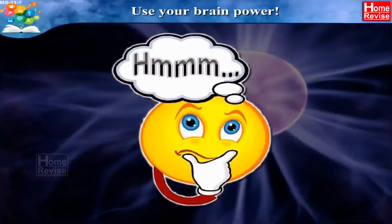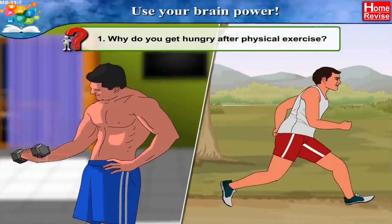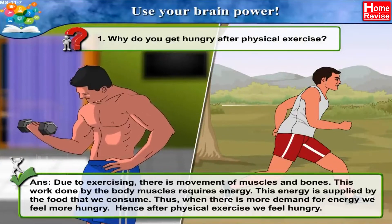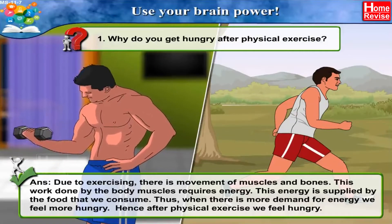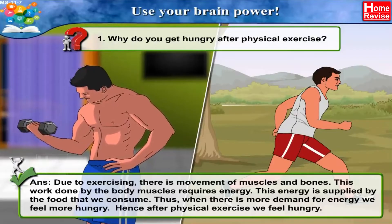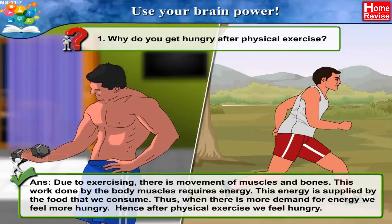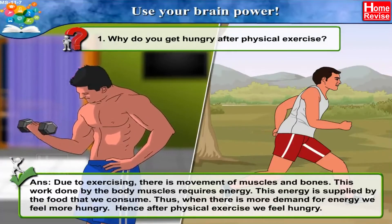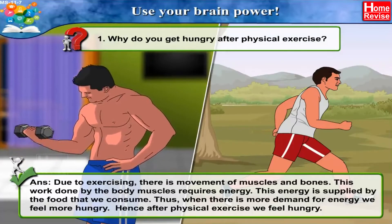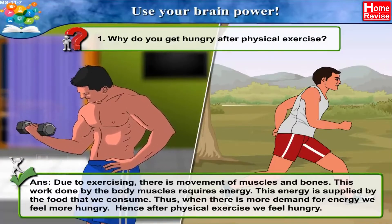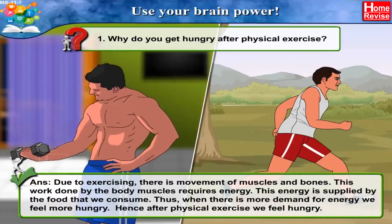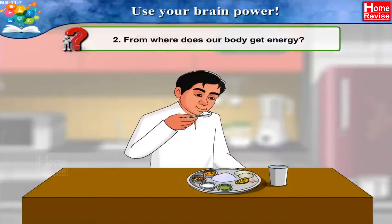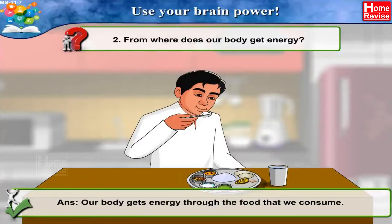Use Your Brain Power. Question 1: Why do you get hungry after physical exercise? Answer: Due to exercising, there is movement of muscles and bones. This work done by the body requires energy, which is supplied by the food we consume. When there is more demand for energy, we feel more hungry — hence after physical exercise we feel hungry. Question 2: From where does our body get energy? Answer: Our body gets energy through the food that we consume.